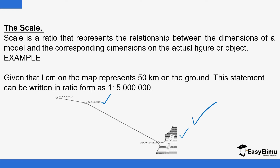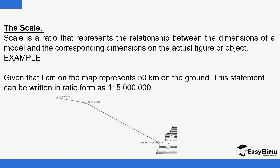A scale can be given in representative form or in ratio form. For example, one centimeter on the map might represent 100 kilometers on the actual ground. That gives you an approximate idea of how long the distance is when you want to drive from Nairobi to Mombasa. A scale is the ratio that represents the relationship between the dimensions of a model and the corresponding dimensions on the actual ground.